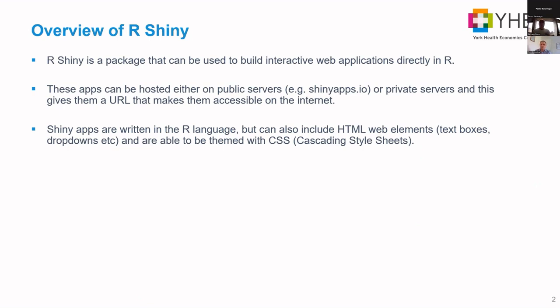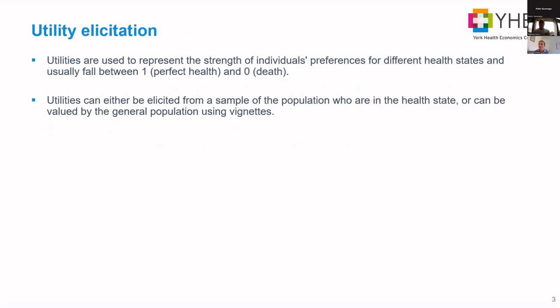Once an app is developed it can either be hosted on a public server, for example shinyapps.io, or private servers like university servers. Once hosted, you get a URL you can share and make accessible on the internet, or you can host them locally as well. You can also use HTML web elements like text boxes or drop-downs, and theme them like a normal website using CSS.